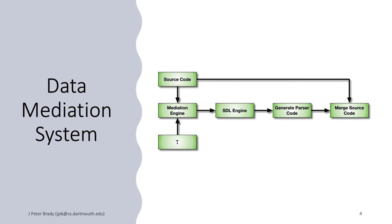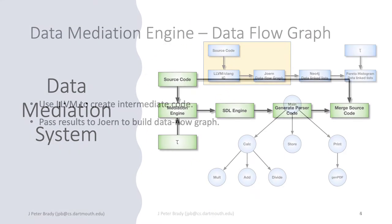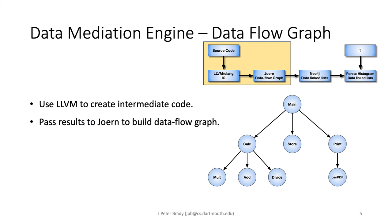Here's a block diagram of our data mediation system. At first we're going to look at this area here at the left side of the diagram. The first part of the mediation engine is the data flow graph. We will take the source code in and use LLVM to create a set of intermediate code. This code will be passed to Jern to create a data flow graph. As you can see here we just have a simple representation of a program with a data flow graph.